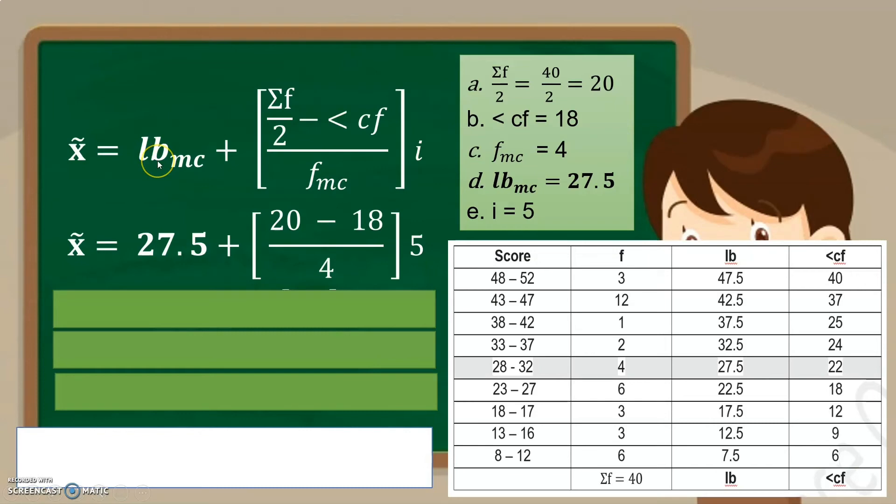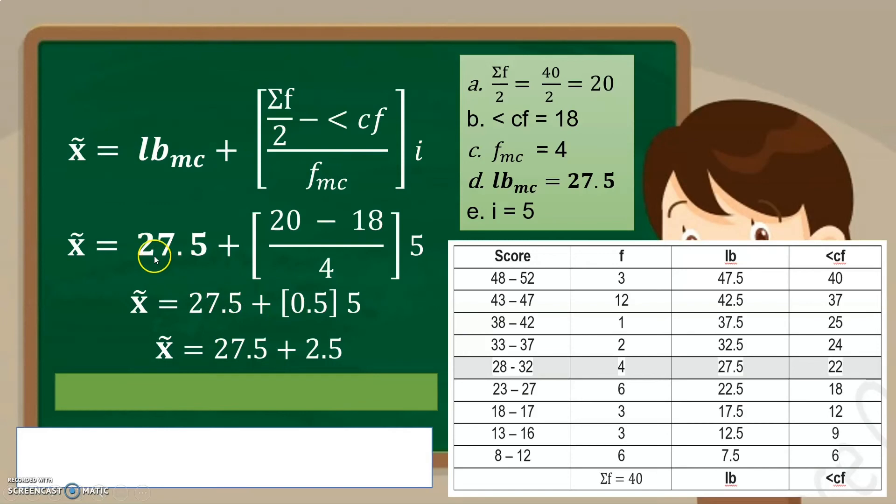27.5 for the lower boundary. Summation of F over 2, that is 20. Minus 18, our CF. And then, frequency of the median class, that is 4. Interval is 5. So, unahin natin, syempre, lahat ng nasa parentheses muna. Ayan. So, okay, 27.5 plus—okay, ito muna unahin natin. And 20 minus 18 is 2 divided by 4, and that is 0.5. Times 5, which is the interval. So, unahin muna natin itong dalawa. 0.5 times 5, that is 2.5. Plus 27.5, and that is 30.